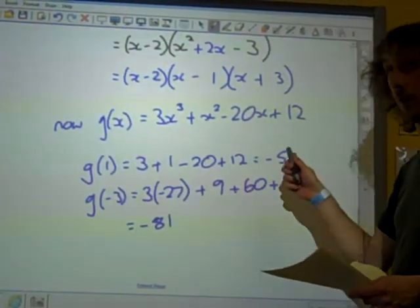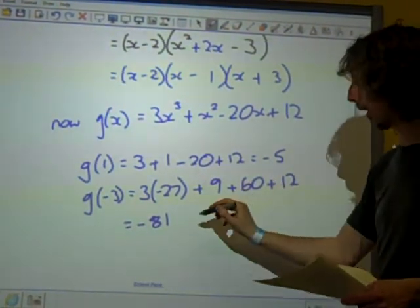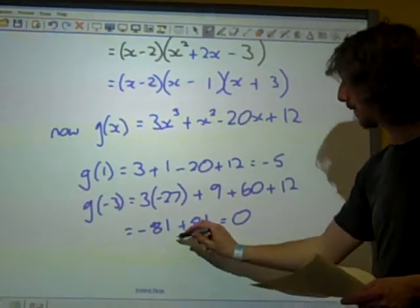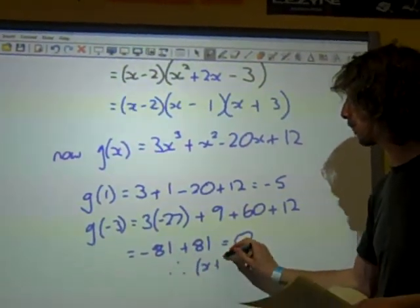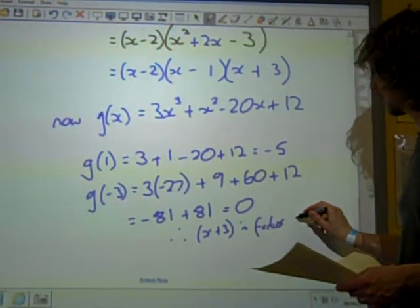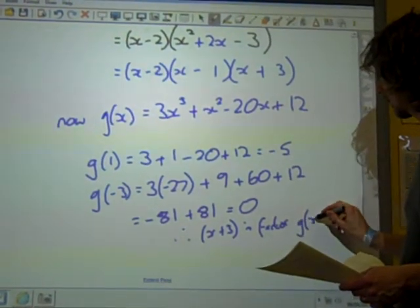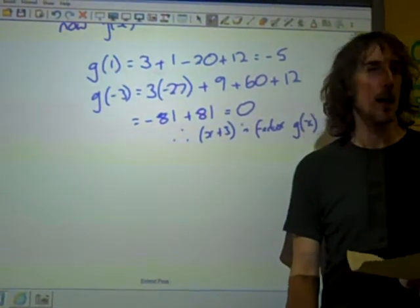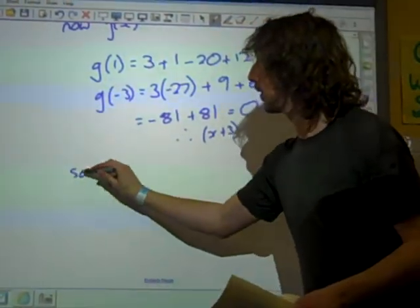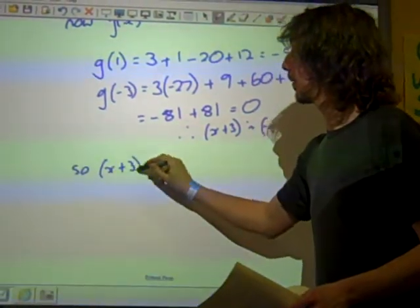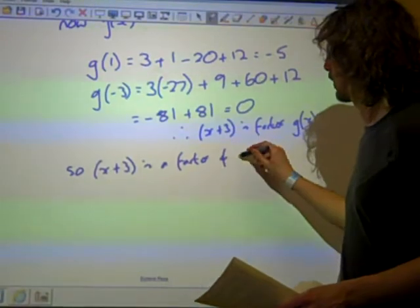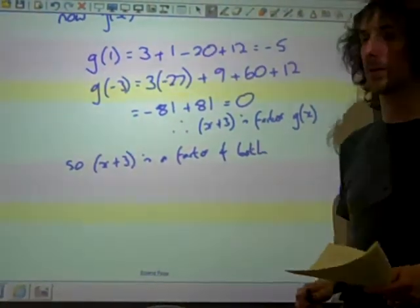And this is, well, 60 and 12 over 72, plus another 9. Plus 81, which does equal 0. Therefore, x plus 3 is a factor of g of x. I missed out the word off there. And so we found it. We found that x plus 3 is a factor of both. OK.